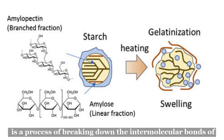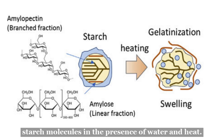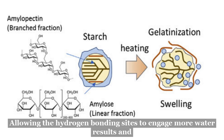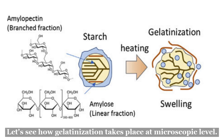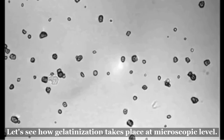Starch gelatinization is a process of breaking down the intermolecular bonds of starch molecules in the presence of water and heat, allowing the hydrogen bonding sites to engage more water, resulting in swelling. Let's see how gelatinization takes place at the microscopic level.